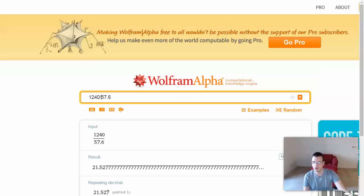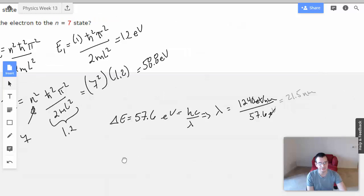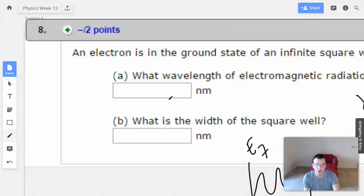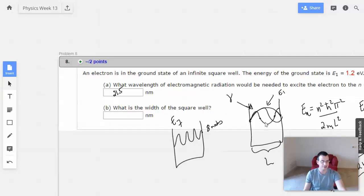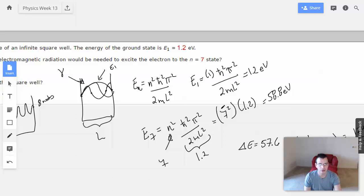So the wavelength that we're going to need, the wavelength of the photon that's going to have to excite this guy from the first state to the seventh state is going to be 21.5 nanometers. What is the width of the square well? Alright. So now we go back and do some calculations here. So the width is this L squared. So I'm going to take this portion right here, this data, and solve it.